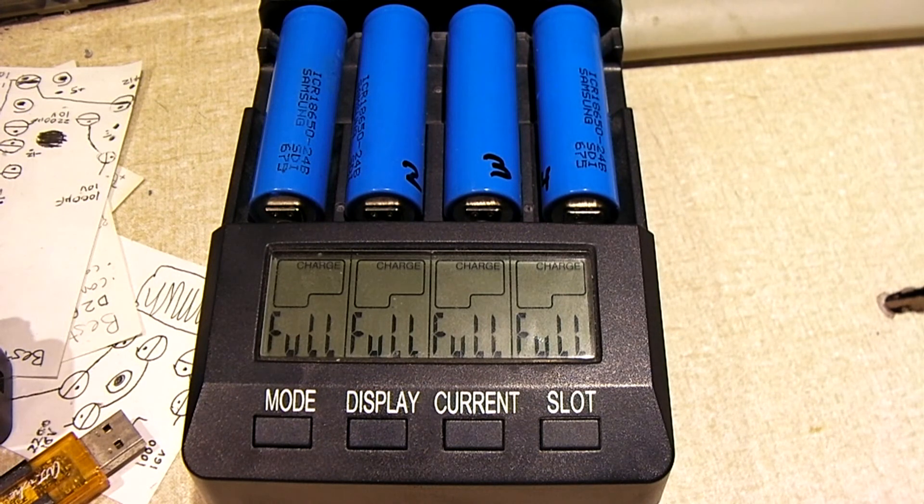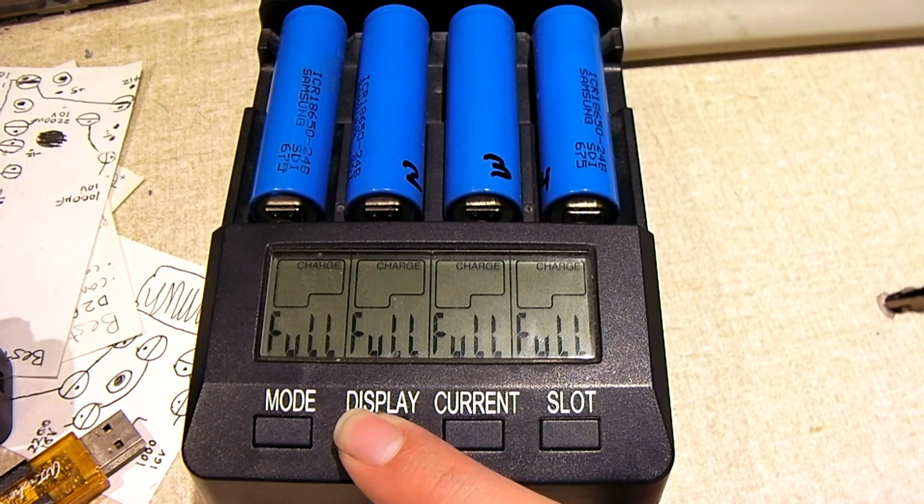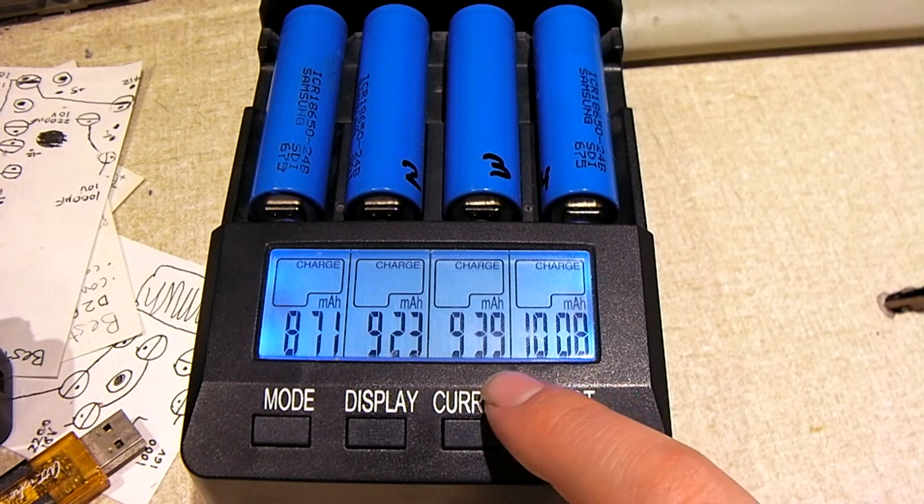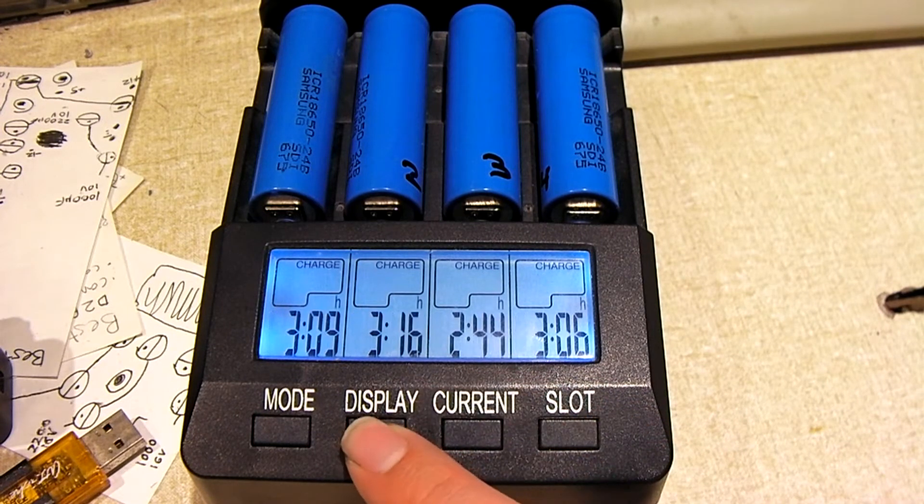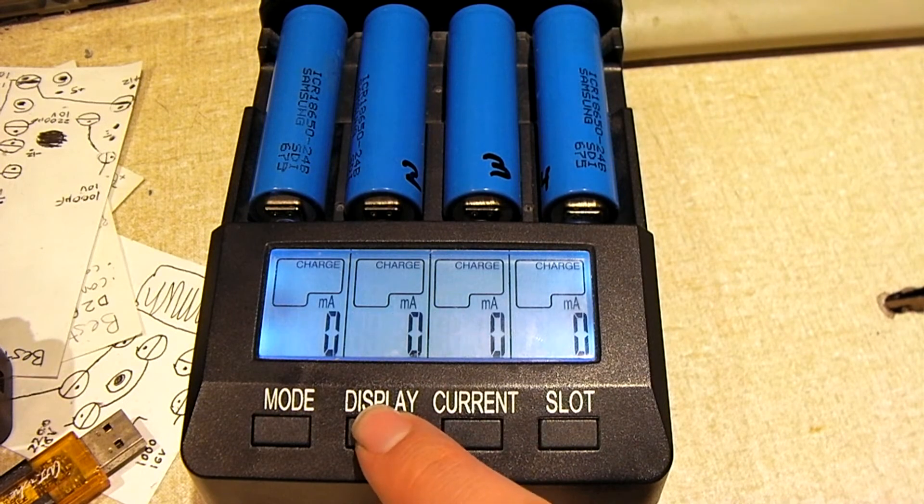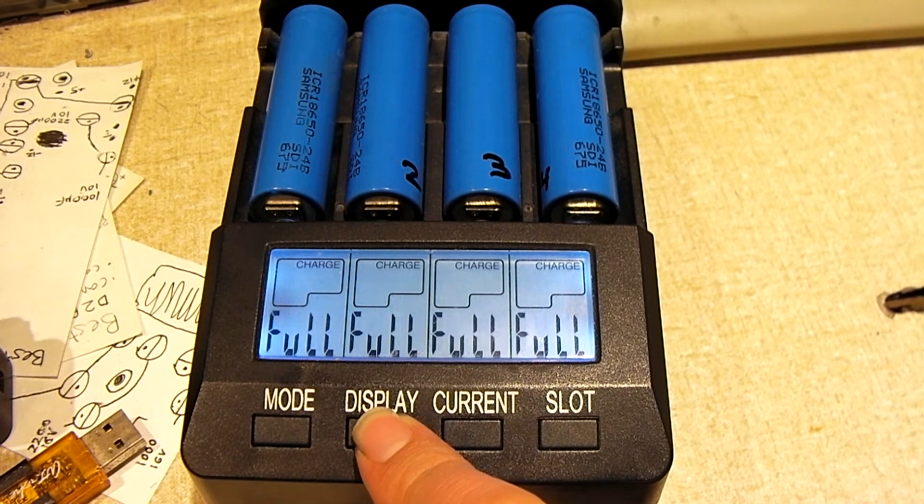Okay buddy, so these four cells charged up just fine. No issues whatsoever. They're not even warm. And that's how much they took. And that's how much time it took. A little over three hours. That's the resting voltage.